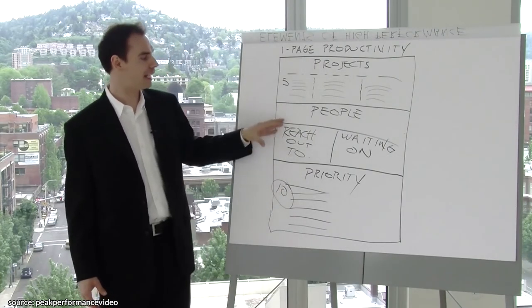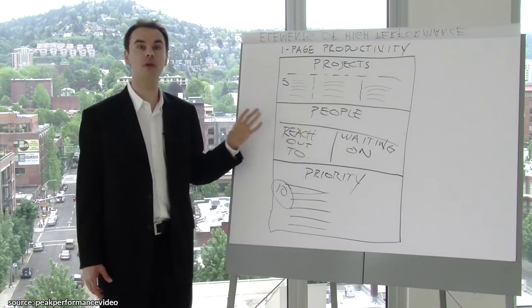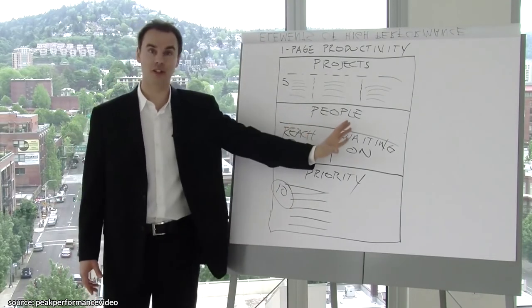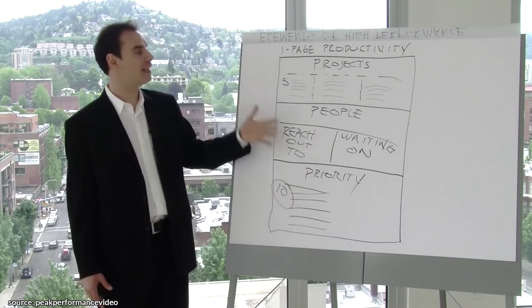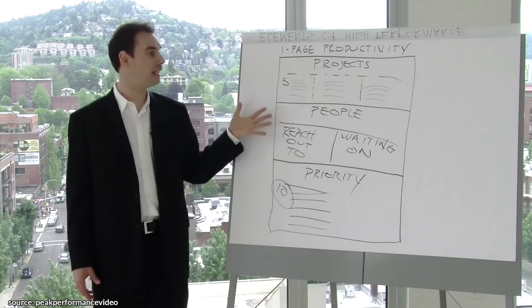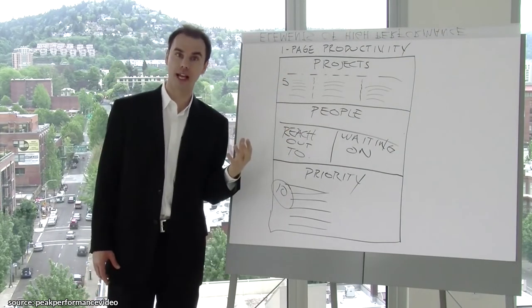Then I move up. Second, I'll go, who am I waiting on and who do I need to reach out to? The people category. I'll do that. Now often, this will take most of the entire day. And then I'll say, if there's any given time left in the day, I'll focus back on the bigger projects, thinking about what it's going to take to accomplish them. So that's the one-page productivity plan for high performers.